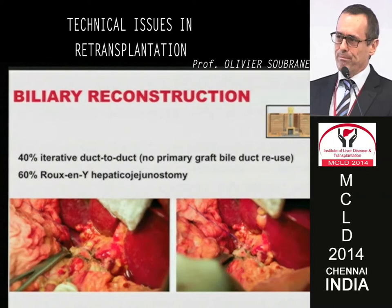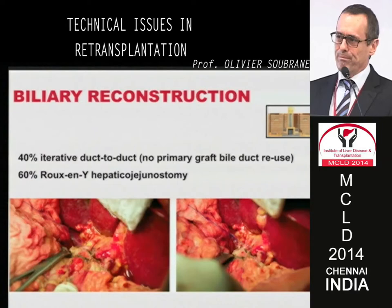Regarding biliary reconstruction: we used an iterative duct-to-duct, which is probably the best option, but we can only use it in 40% of patients. It is necessary not to use the primary graft bile duct. In 60% of cases, we use a hepaticojejunostomy. When we do use an iterative duct-to-duct, we sometimes place an internal rubber stent, which will be removed later by ERCP.